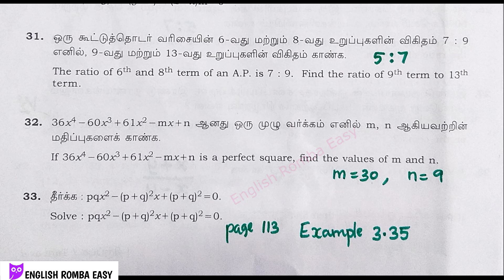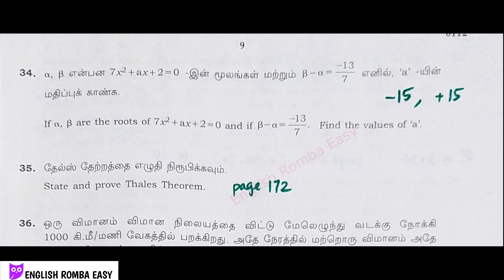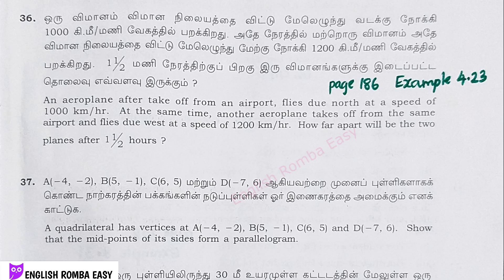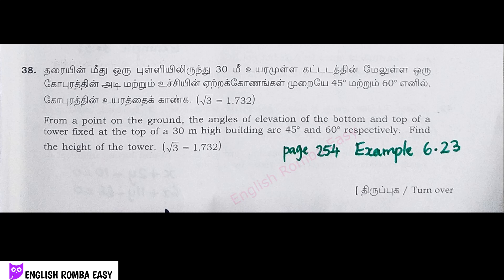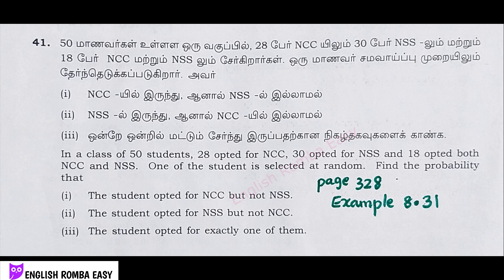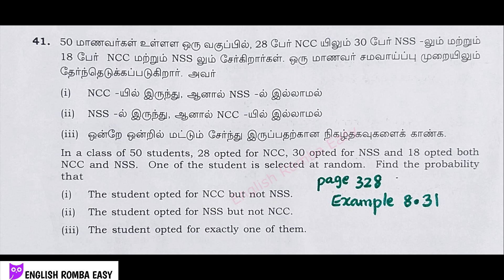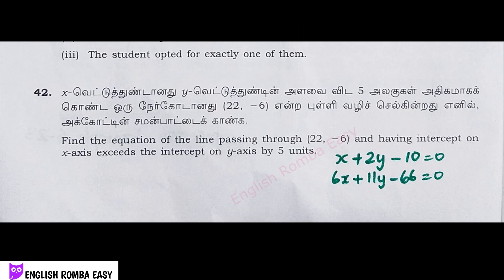Question 33: page number 113, example 3.35. Question 34 answer: minus 15 and plus 15. Question 35 is a theorem, page 172. Question 36: page 186, example 4.23. Question 38: page 254, example 6.23. Question 39: exercise number 7.2, question number 10, page number 290. Question 40 answer: 66 cubic centimeters. Question 41: page number 328, example 8.31. Question 42 answer: two equations — x plus 2y minus 10 is equal to 0, and 6x plus 11y minus 66 is equal to 0.